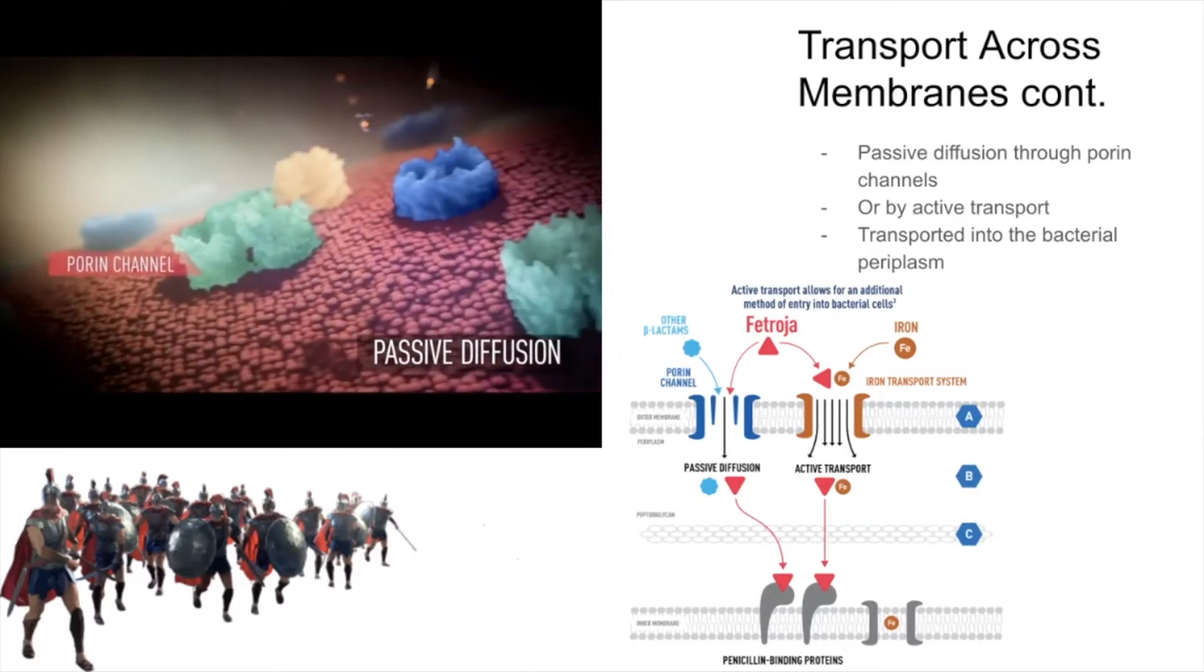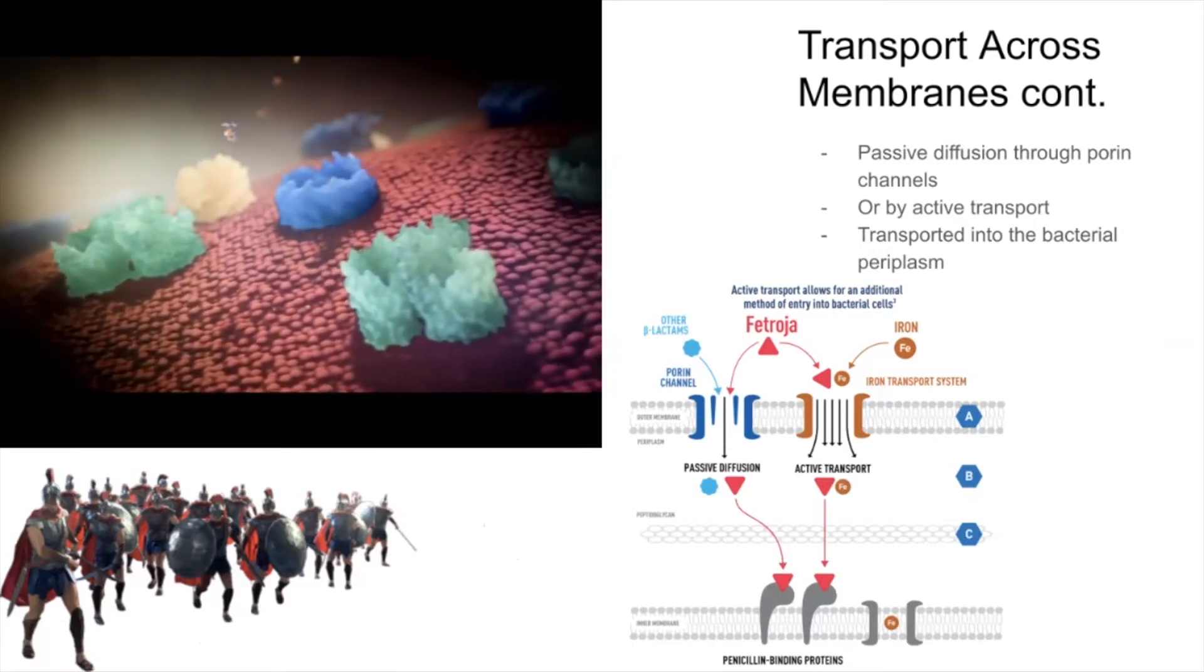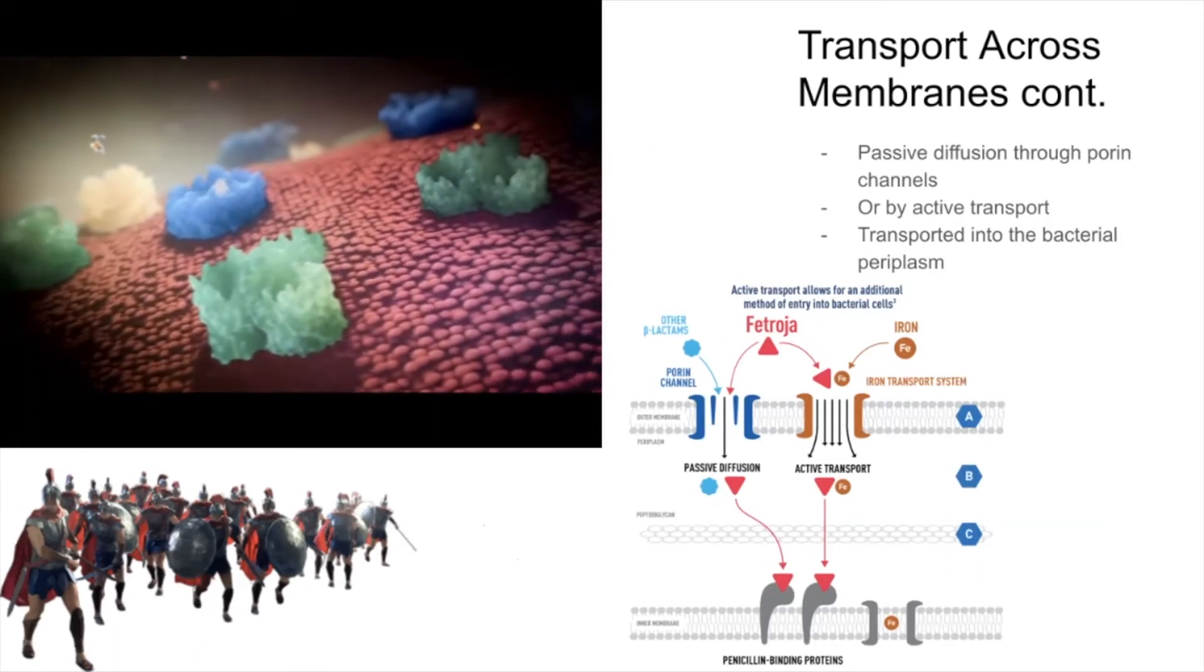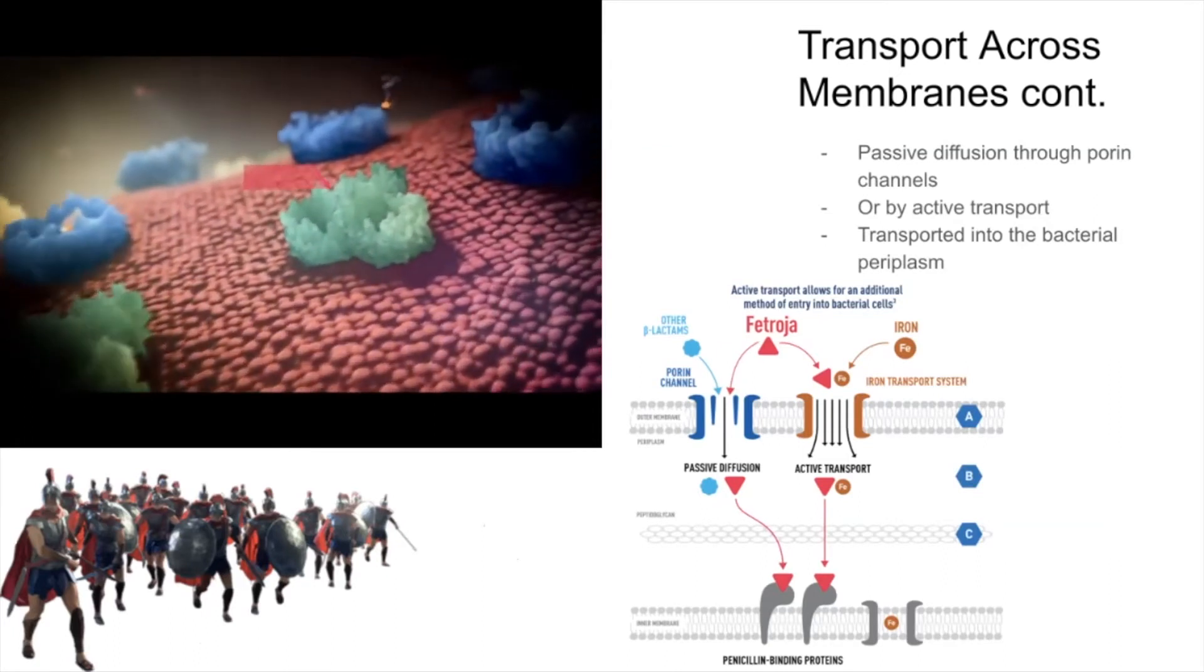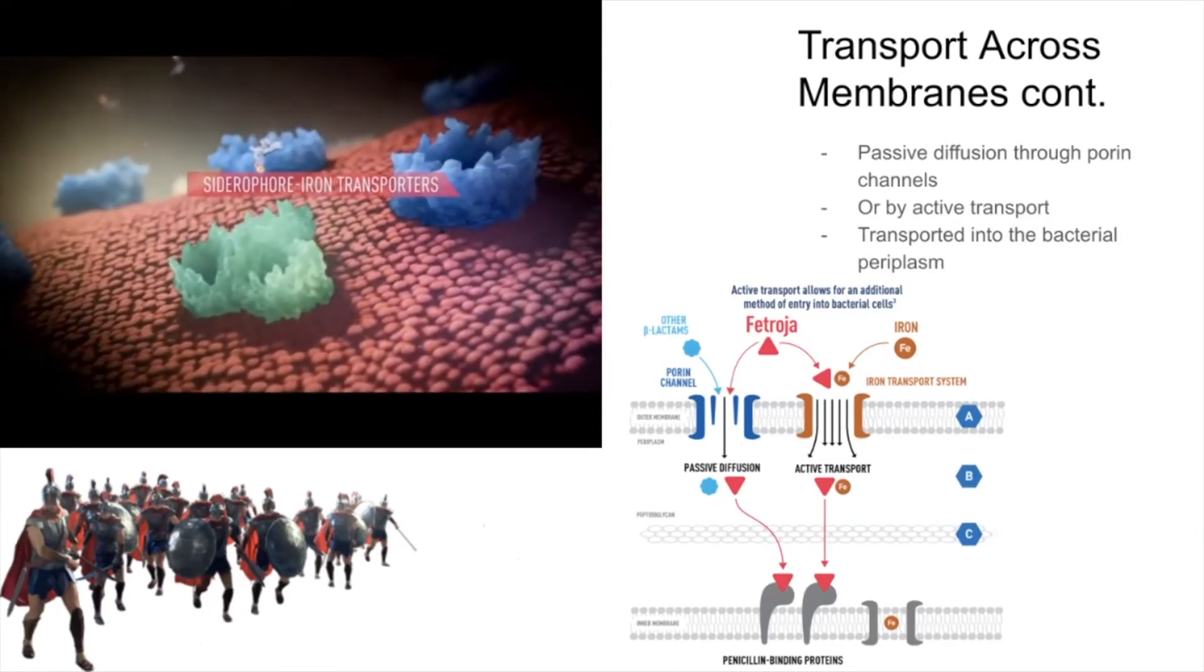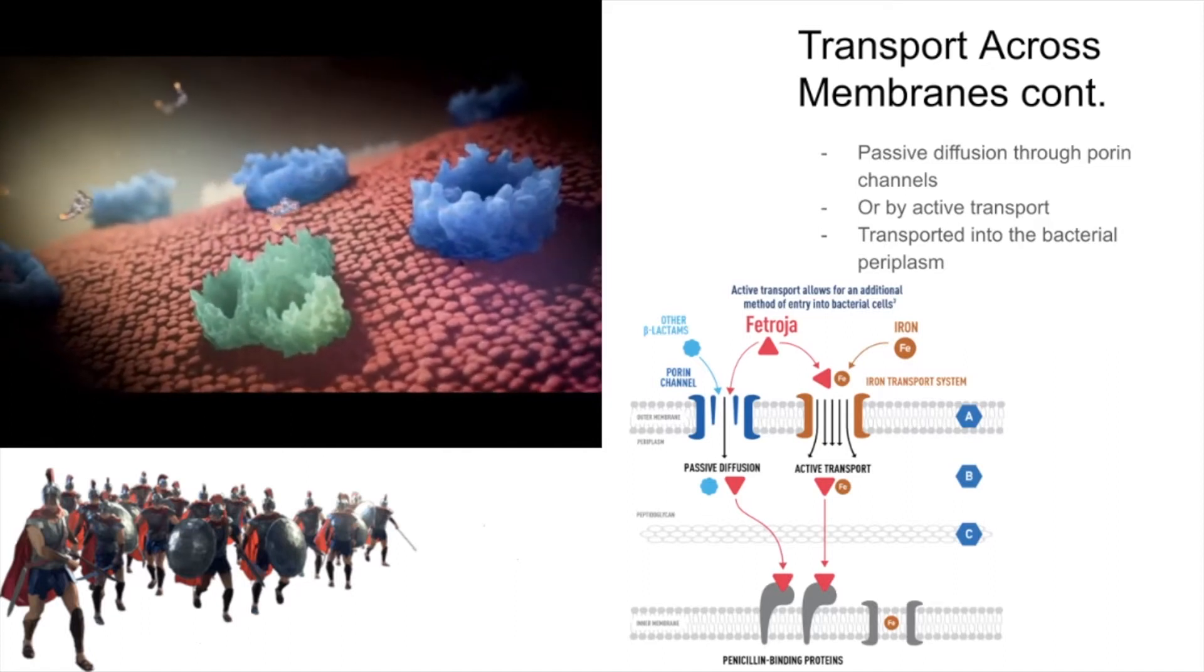In addition to porin entry, Fetroja can enter bacteria by active transport by way of the siderophore iron transporters, leveraging the bacteria's necessity for iron.